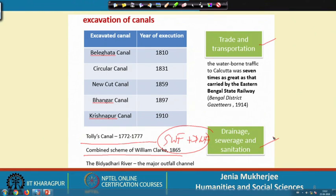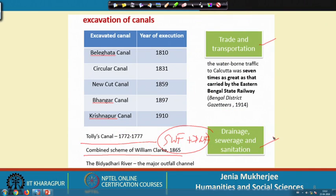Very interestingly, while today metro railway pillars have been constructed on the Adi Ganga, if we go back 200 years we find that the waterborne traffic to Kolkata was 7 times as great as that carried by the eastern Bengal state railway. Nobody can even imagine that those canals — which are now totally choked and in such bad condition that people consider them just nullas or drains — were once thriving water courses.